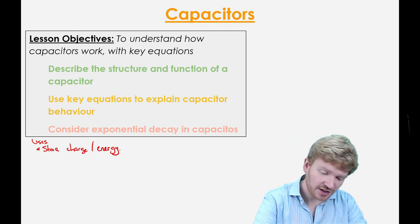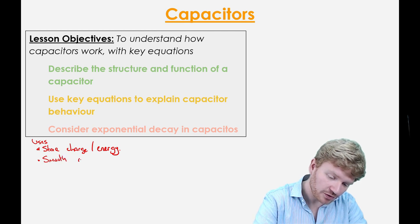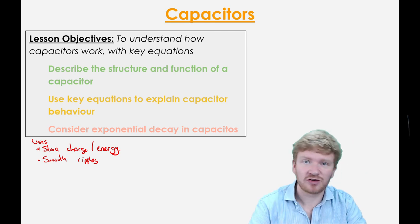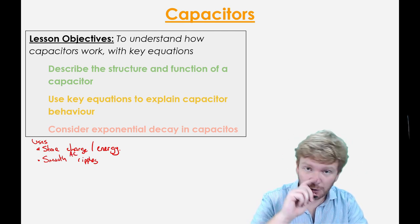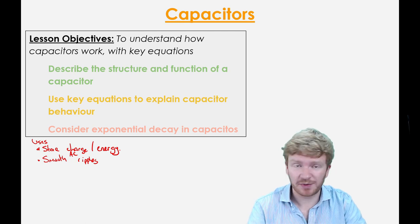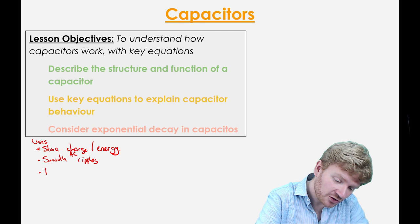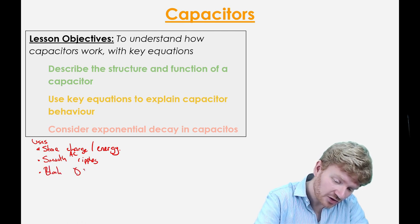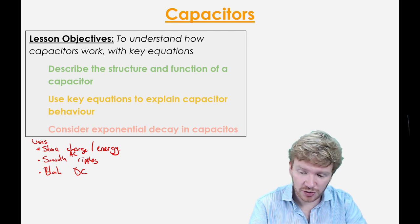The second thing that capacitors can be used for is to smooth ripples — AC ripples. When we look at AC current, I'll explain a little bit more about that. They can also be used to block DC; I'll explain how when we go on to the electronics unit.